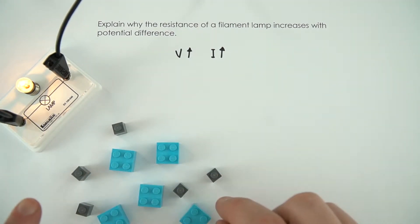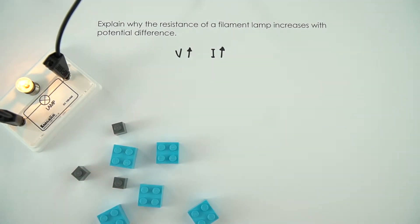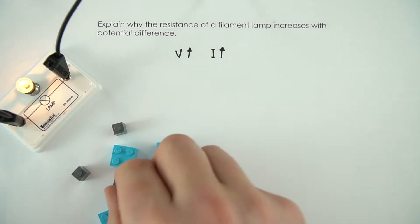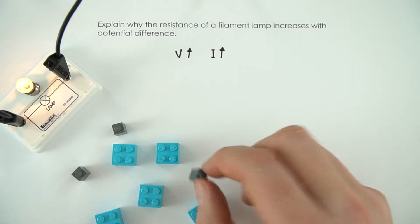When you have a potential difference, all of these electrons start to flow in one direction. When you've got a greater potential difference, more of these things are going to be flowing past this metal kind of ionic lattice.